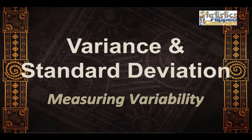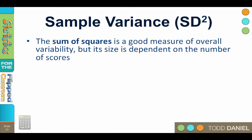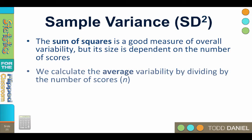In order to measure variability, we will move from the sum of squares to the variance, and then to the standard deviation. Sum of squares is a good measure for overall variability, but the size of the sum of squares is dependent upon the number of scores. As you increase sample size, the sum of squares will also increase, but the increase is not due to increased variability — simply from having more scores.